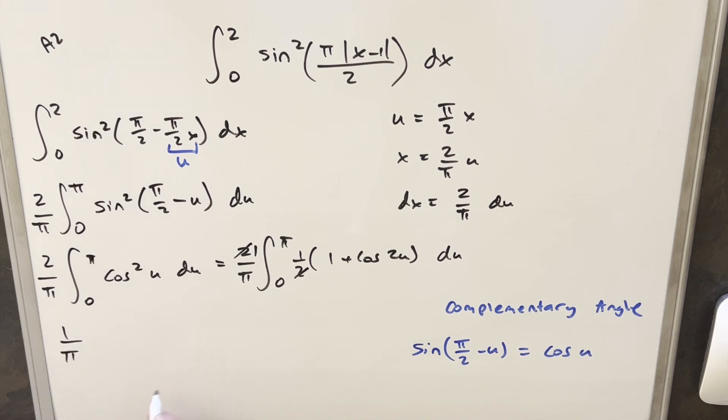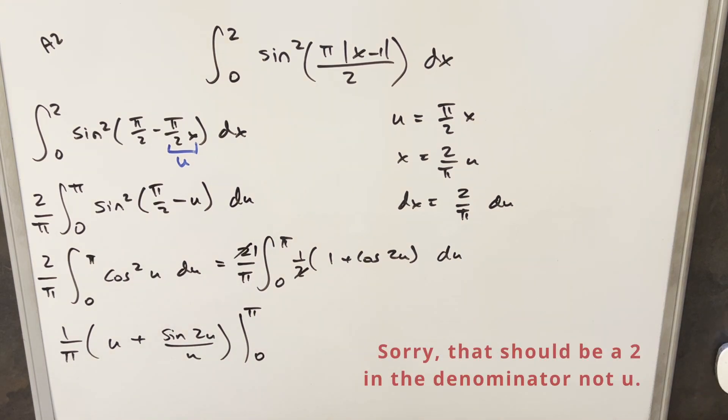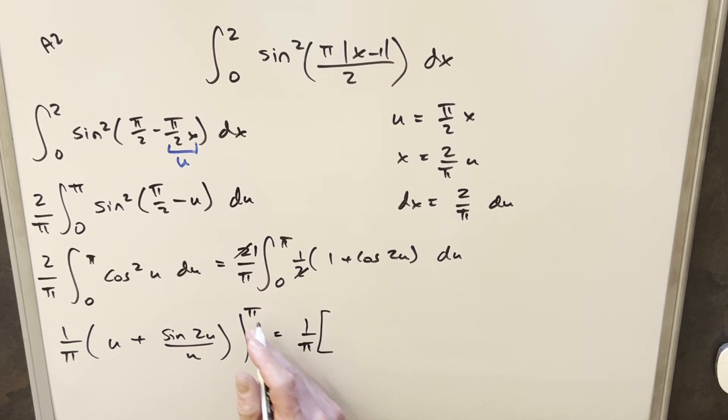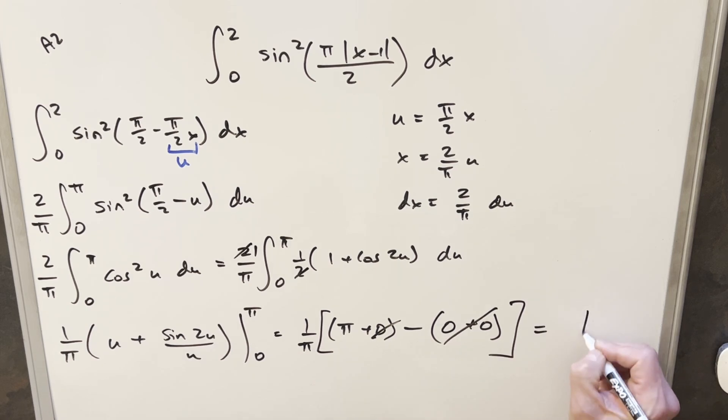So this is going to be 1 over pi. Integrating here, this is going to give me u plus sine 2u over 2. And we just need to evaluate from zero to pi. Next, we just want to plug things in and evaluate this. So we'll have our 1 over pi here. Then plugging pi in, it's just going to give me pi plus sine of 2 pi is just zero. Then plugging in zero, that gives me a zero there. Sine at zero, that's just another zero. So all this stuff's going away. So all we're left with is 1 over pi times pi. And so our solution to this is just 1.